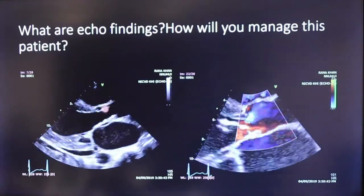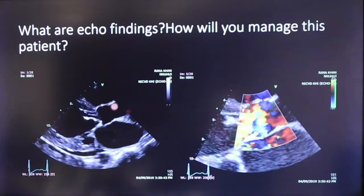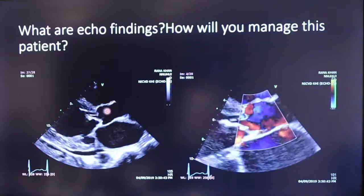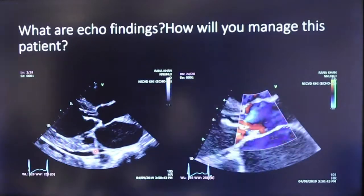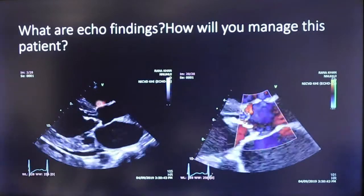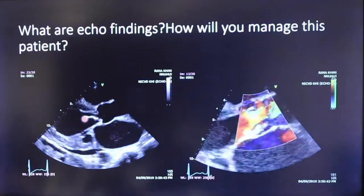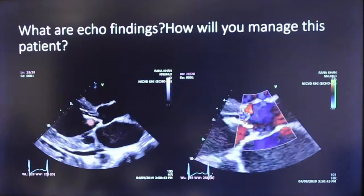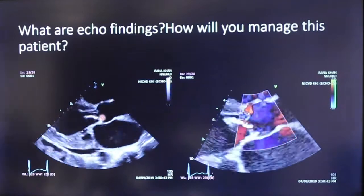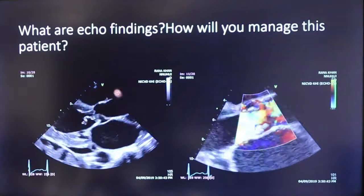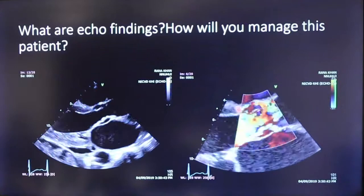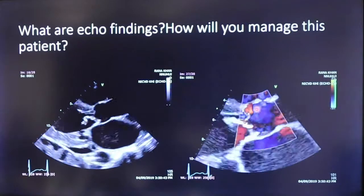The most important view is the parasternal long axis view, showing the right ventricle, left ventricle, aortic valve, and left atrium. The left atrium is grossly dilated compared to the aorta. On the aortic valve, there is a linear mobile echogenic density attached, causing distortion of the aortic valve — a clearly non-coaptating aortic valve on 2D. On color, although not covering the LVOT, it shows a jet of formation.